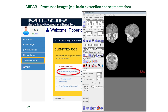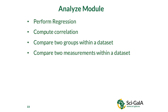Just to show that brain extraction has happened — this is a 3D brain-extracted image, compared to the 2D slide shown earlier. The Analyze module provides simple statistics using R. You can perform regression, compute correlations, compare two groups within a dataset, or compare two measurements — for example, comparing a clinical group with a control group. Statistics were included to make MIPA smarter.